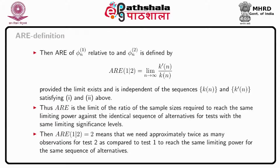An ARE equal to 2 means we need approximately twice as many observations for test 2 compared to test 1 to reach the same limiting power for the same sequence of alternatives. Naturally, test 1 is better or worse than test 2 in the limit according to whether ARE is greater or less than 1.